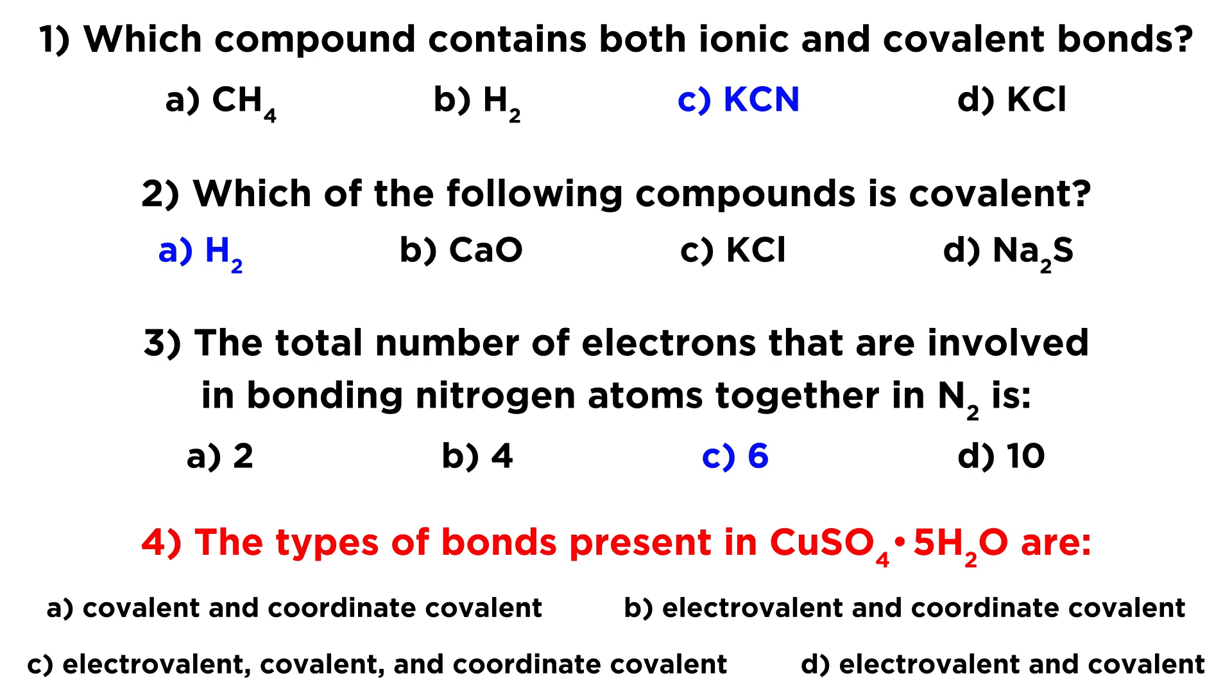But let's also be aware that the structure of this hydrate is a little bit interesting in that those water molecules, they're not bound to the copper sulfate in a typical way. We wouldn't call those ionic bonds, and we also wouldn't call those covalent bonds. They're a little bit of a stranger kind of bond, which is called a coordinate covalent bond. So actually, the answer is going to be C. All three of those types of bonds are present in this compound. So the answer will be C.